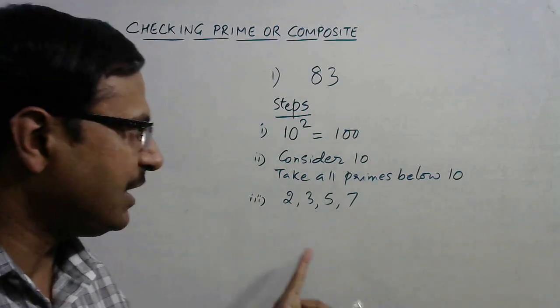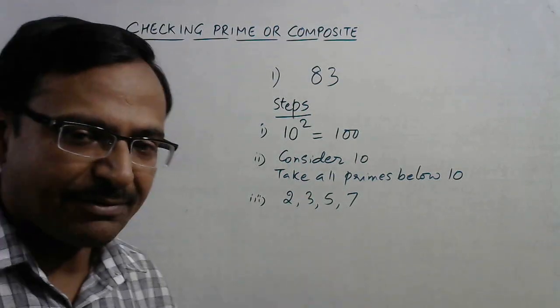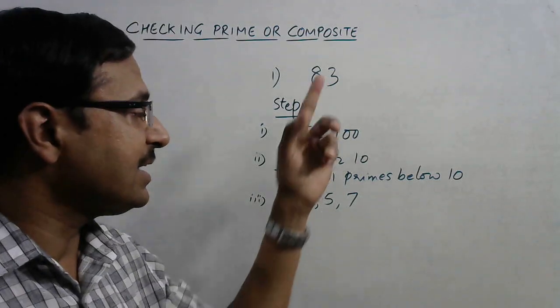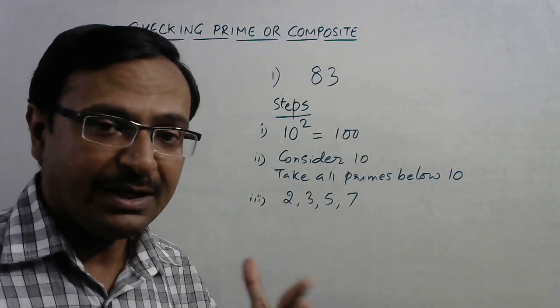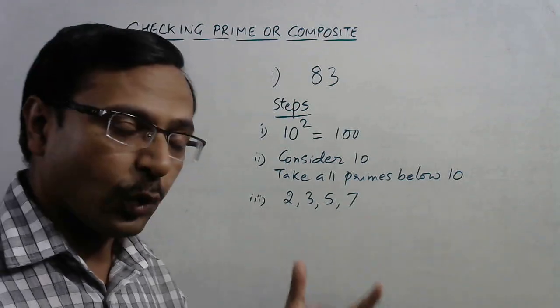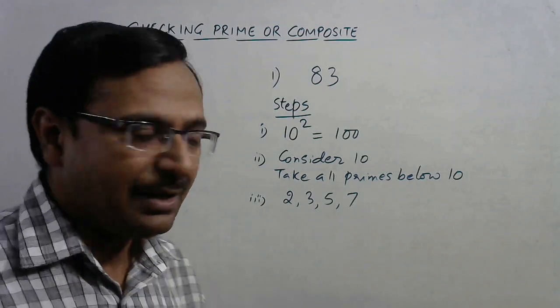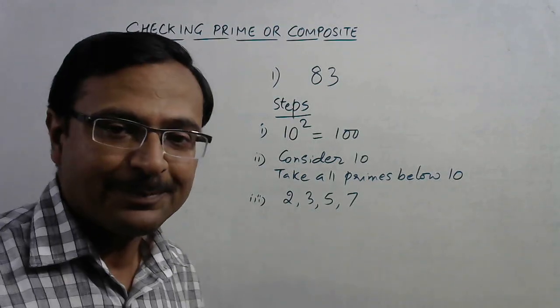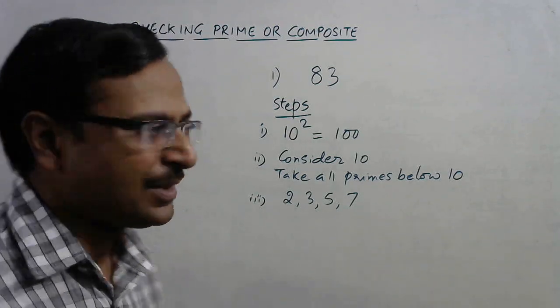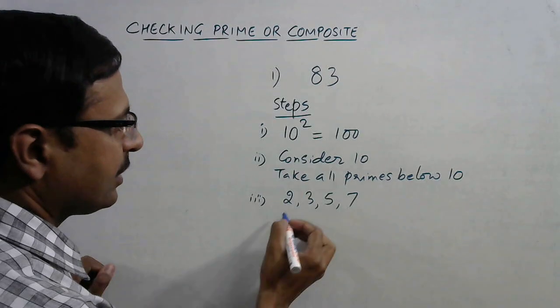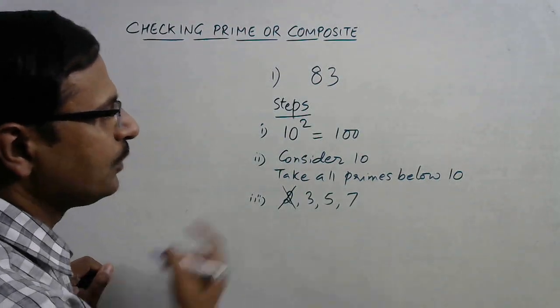If 83 is divisible by any one, even any one of these four, then it is not prime. And if it is not divisible by any of them, then it is prime. So see, it is an odd number, so it is not divisible by 2. 8 plus 3 is 11; 11 is not divisible by 3, so the number is also not divisible by 3.